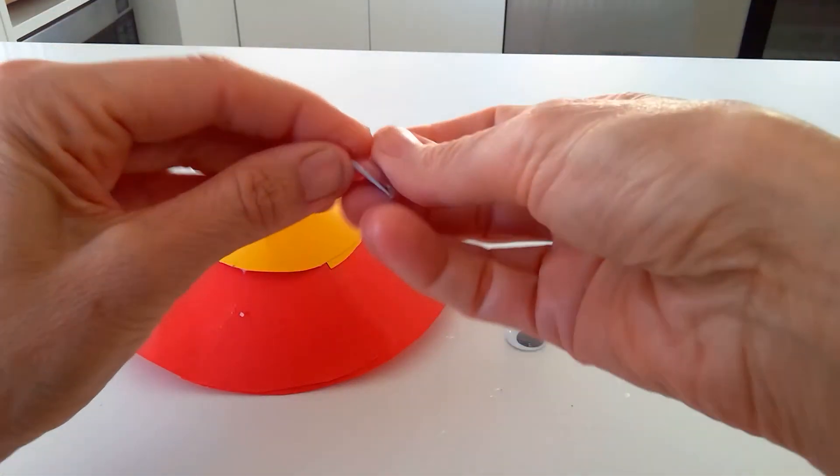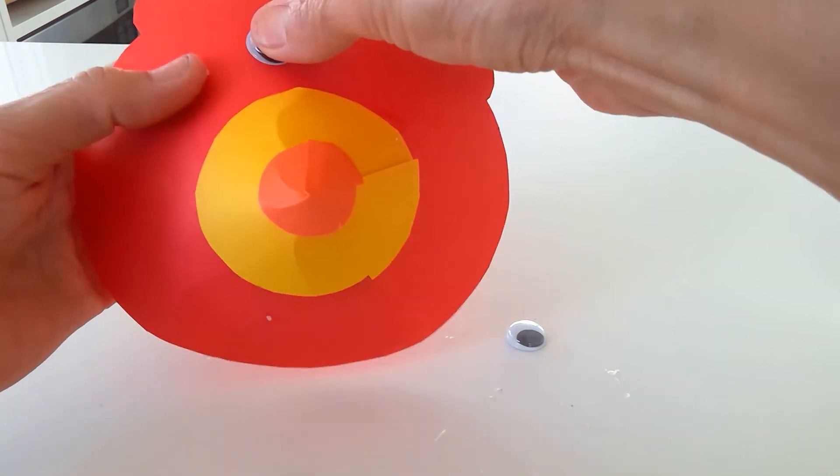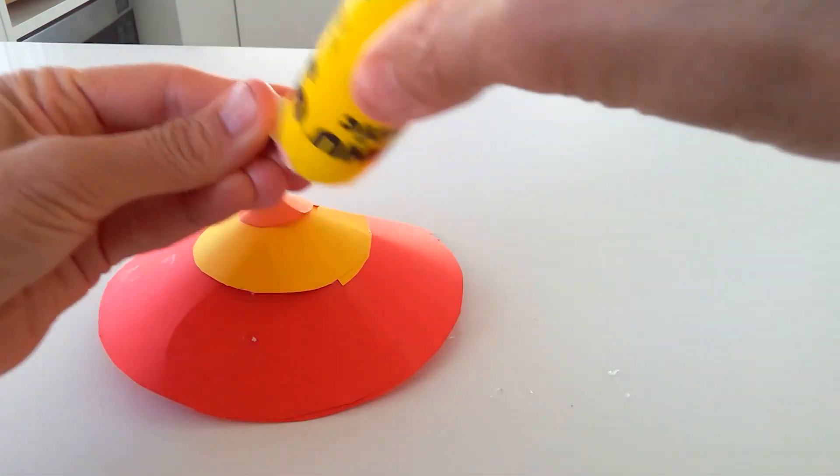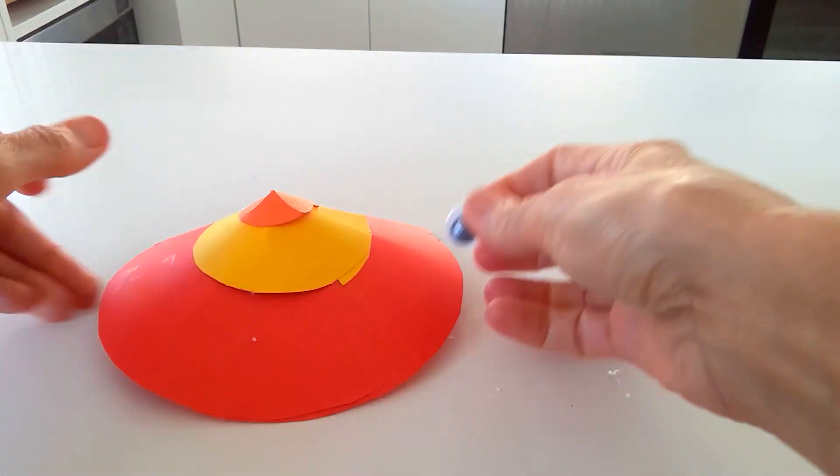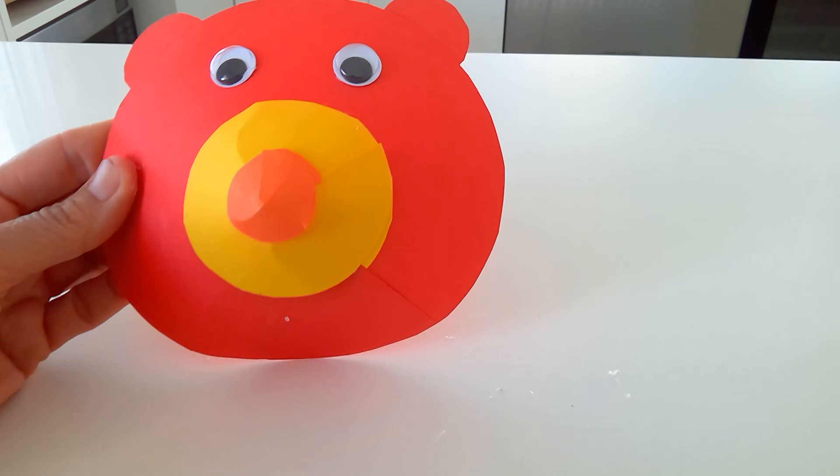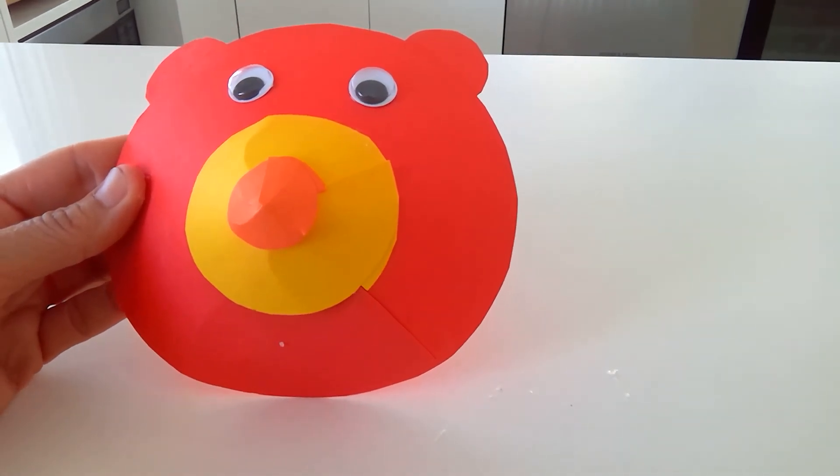So I'll pop one of the googly eyes on. Pop some glue onto the second googly eye and pop that onto my bear. Looking really great.